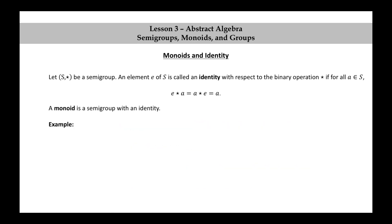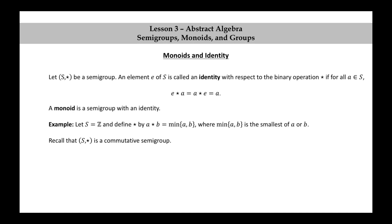Let's look at another example. Let S be the set of integers and define ★ by A★B = min(A,B), where min(A,B) is the smallest of A or B. We've already seen that this set of integers together with this operation ★ is a commutative semigroup. Is it a monoid? The answer is no.